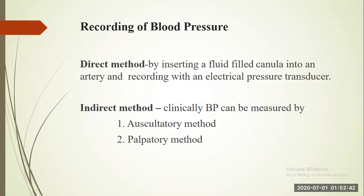Blood pressure can be measured directly and by indirect method. Directly, by inserting a fluid-filled cannula into an artery and recording with an electrical pressure transducer, but this is not used clinically. Clinically, blood pressure is measured through indirect methods — mainly the auscultatory method and the palpatory method. Auscultatory refers to sounds heard through a stethoscope, while palpatory means blood pressure is measured manually.